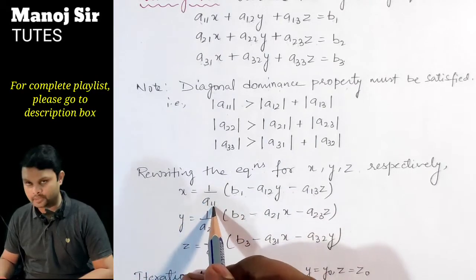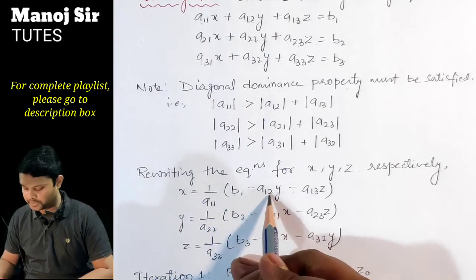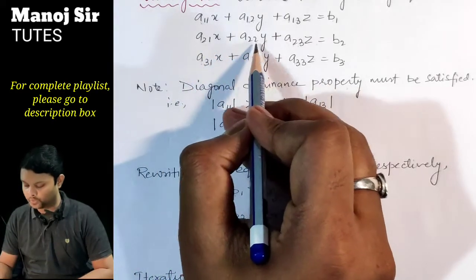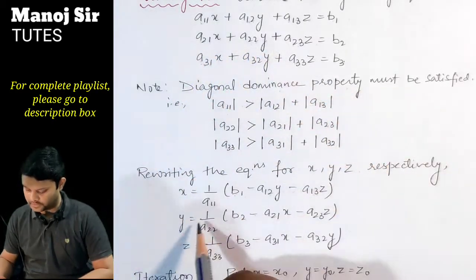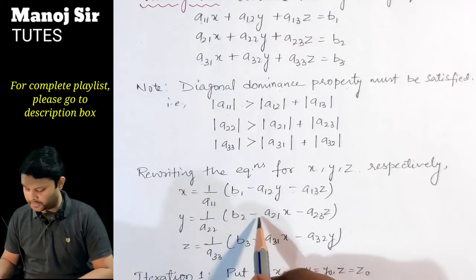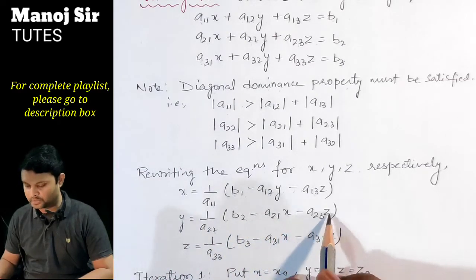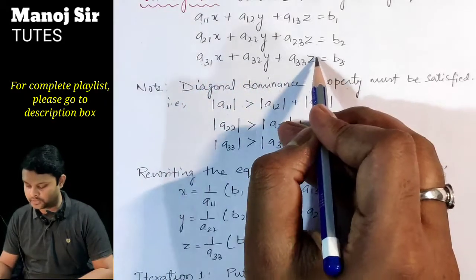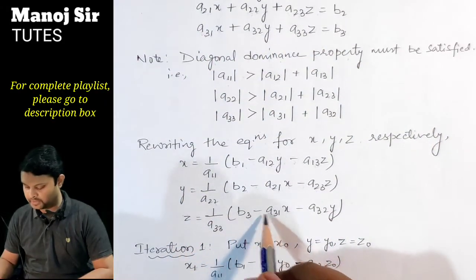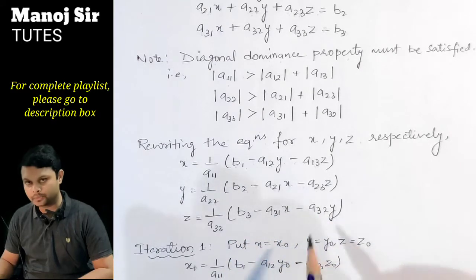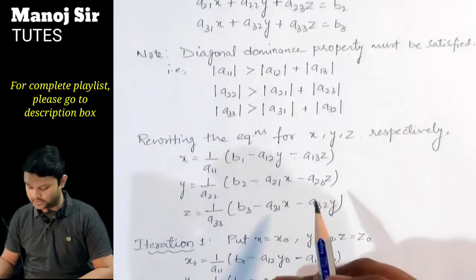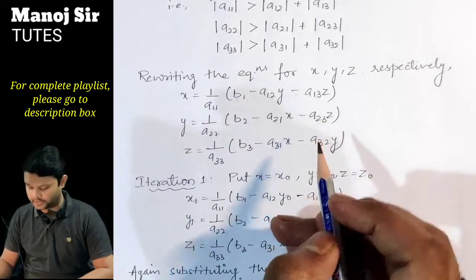From the first equation we isolate x: x = (1/a11) · (b1 − a12·y − a13·z). From the second equation we isolate y: y = (1/a22) · (b2 − a21·x − a23·z). From the third equation we isolate z: z = (1/a33) · (b3 − a31·x − a32·y). After writing these equations we perform certain iterations.